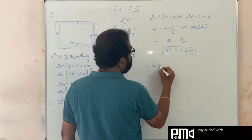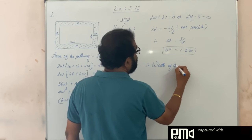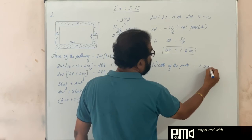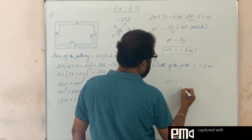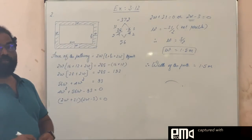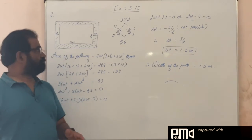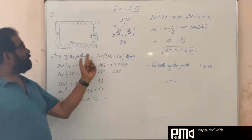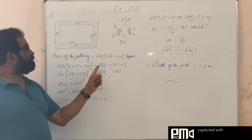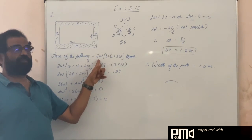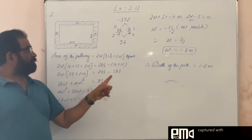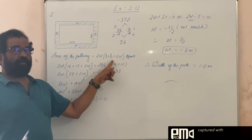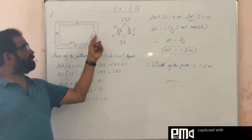Therefore, the width is equal to 1.5 meters. Just remember the formula: for a rectangular pathway outside, the area of the pathway equals 2W into (L plus B plus 2W), where W is the width and L and B are the length and breadth. This equals the area of the outer rectangle minus the area of the inner rectangle. The area increases to 285, so pathway area equals 285 minus L into B.